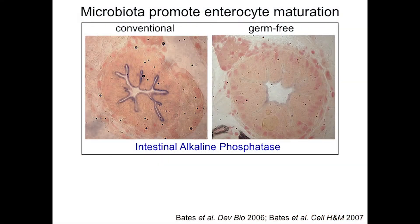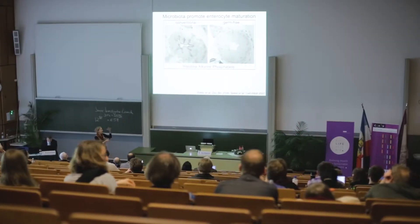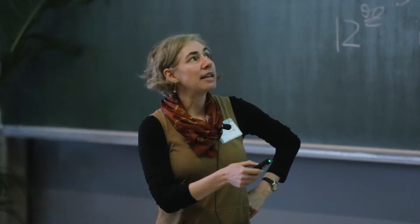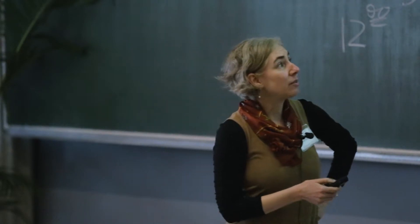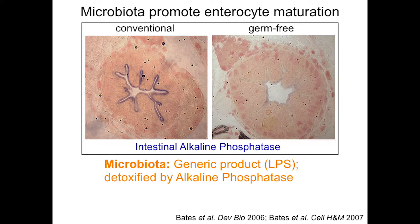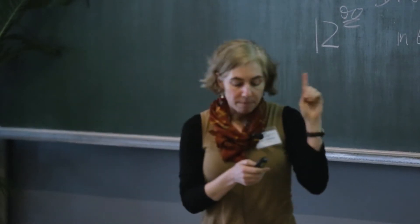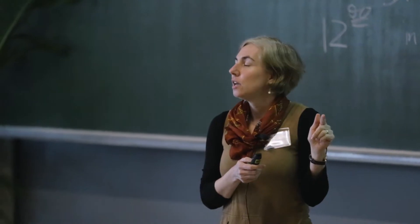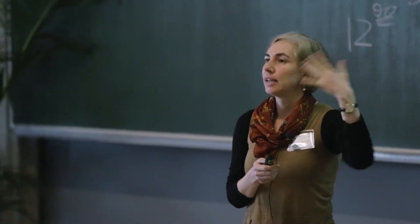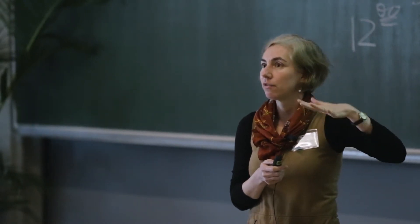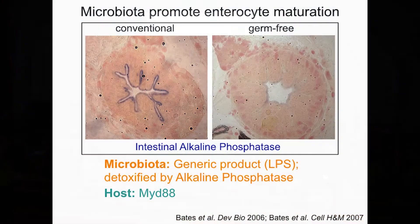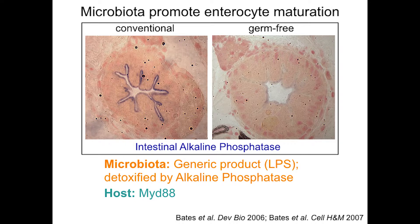We looked at the expression of a classical marker of enterocyte maturation, intestinal alkaline phosphatase, which you can visualize with this purple staining on the apical surface of the gut lumen. There's much less of that enzymatic activity in a germ-free intestine. We went on to show that the bacterial cell wall component lipopolysaccharide — a very common component found in all gram-negative bacteria — is sufficient to reverse the lack of this alkaline phosphatase activity. Interestingly, that enzyme in the host actually detoxifies LPS, creating a feedback where the bacteria upregulate an enzyme that makes them less pro-inflammatory. The host pathway perceiving that signal is a common innate immune signaling pathway depending on MyD88, the common adapter for toll-like receptor signals.